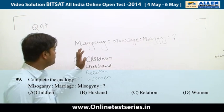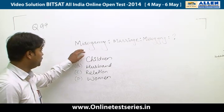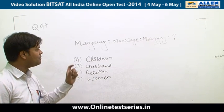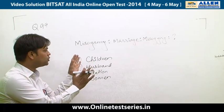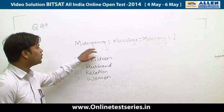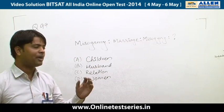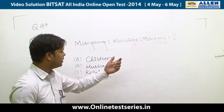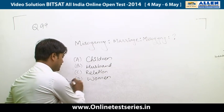Question 99 is from analogy. Misogamy has a relation with marriage. The root 'gamy' comes from 'gamos' meaning marriage, and 'miso' comes from 'misos' meaning hate — so misogamy means one who hates marriages. Similarly, misogyny has 'miso' plus 'gyne', where 'gyne' relates to women. So misogyny is related to women, and the right answer is D.